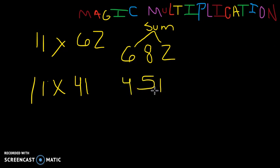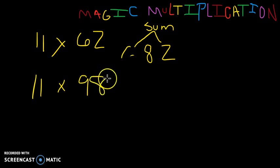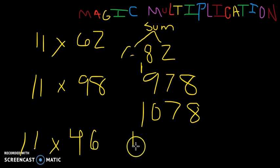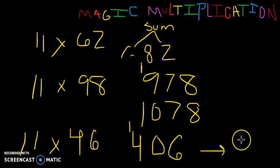So what if these numbers add up to more than 9? It's pretty simple as well. All you have to do differently, let's do 11 times 98. When you add the numbers, 9 plus 8 which is 17, you take that second digit, carry the 1. 9 plus 8 becomes 10, so it's 1078. Likewise with something such as 46, we're still separating the 4 and the 6. We add them, that comes out to 10, carry the 1. So the answer is 506.